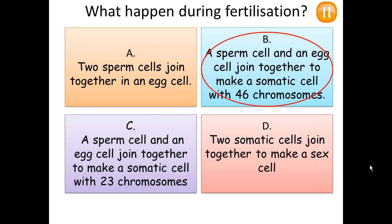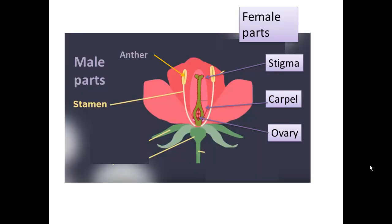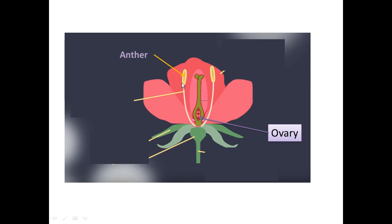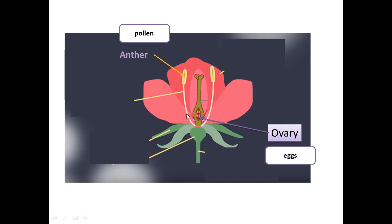Sexual reproduction and fertilization happen not just in human beings but also in plants. In plants, the male part releases the male sex cell and the female part releases the female sex cell to allow fertilization. The male part is made of the stamen and anther — the anther is where the male sex cell is produced. The female part includes the stigma, carpel, and ovary. In plants, the male sex cell released from the anther is called pollen, and the female sex cell found in the ovary is called the egg.